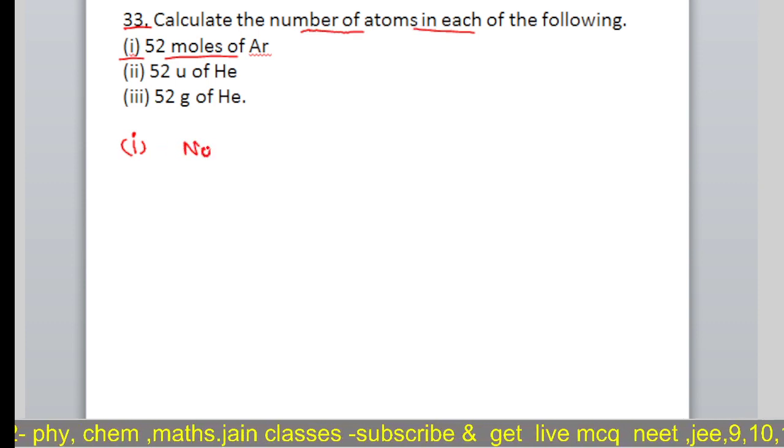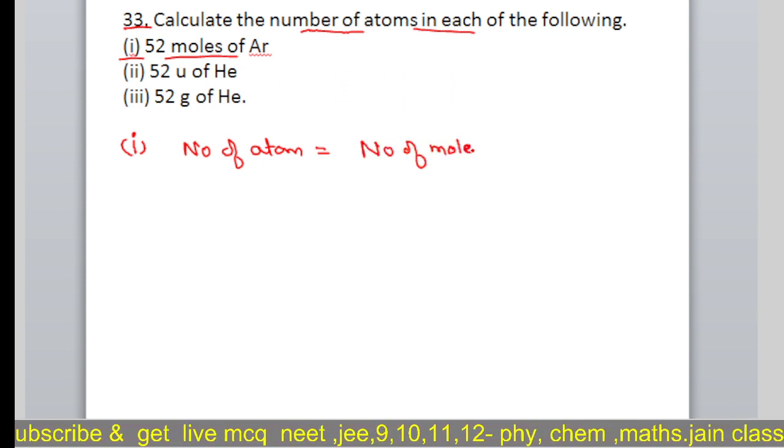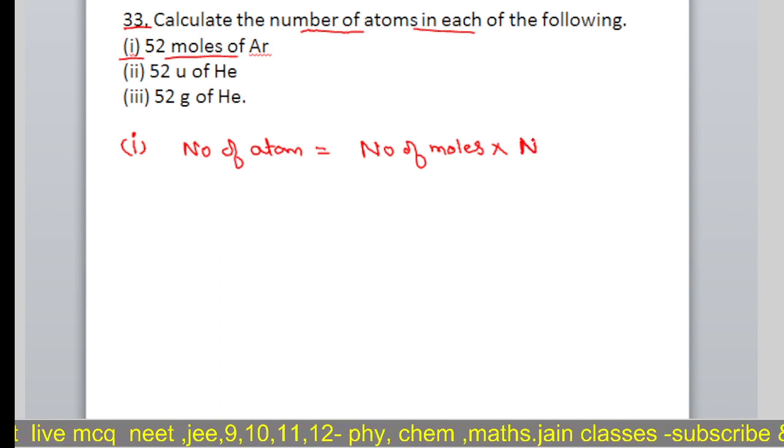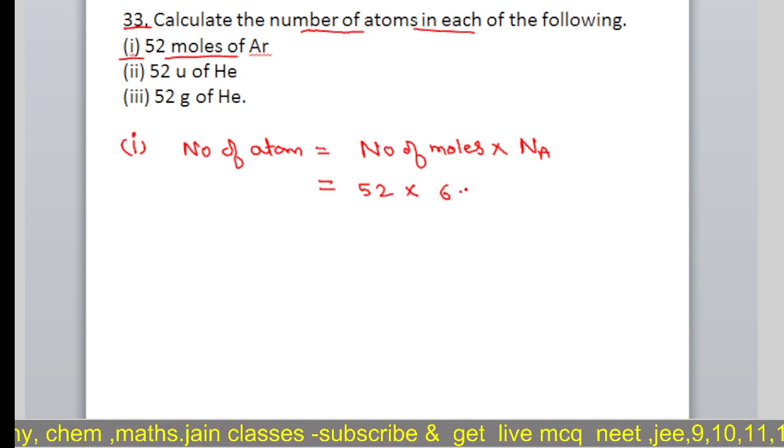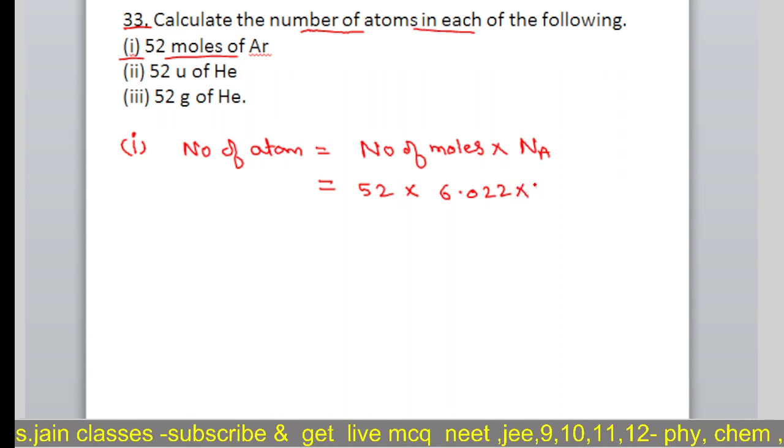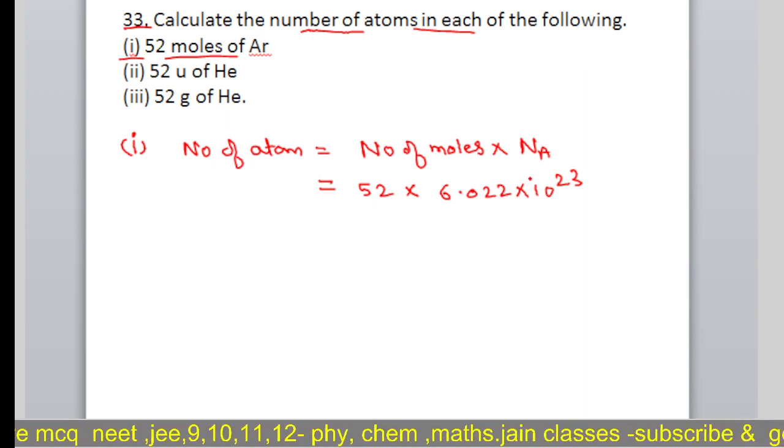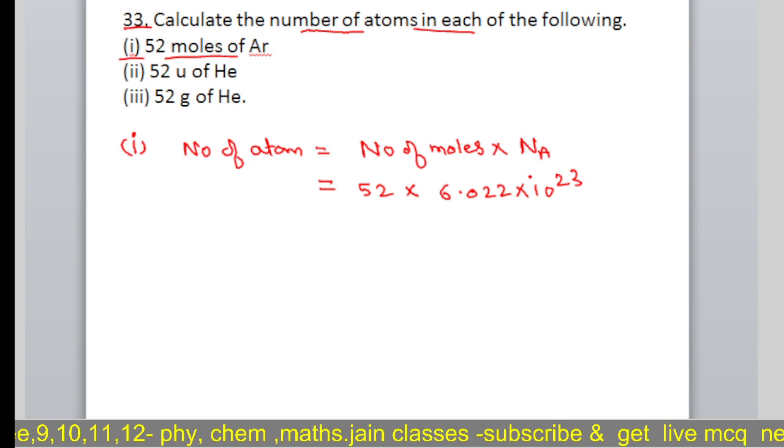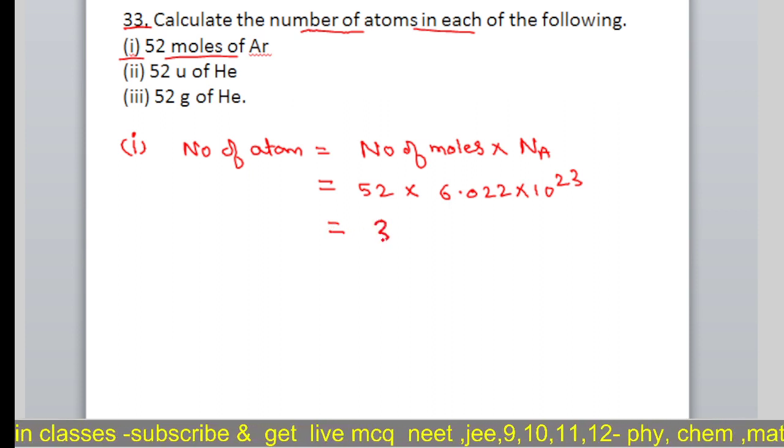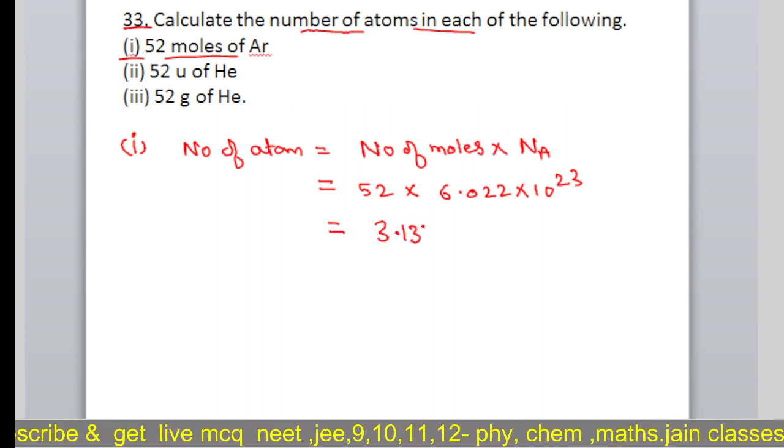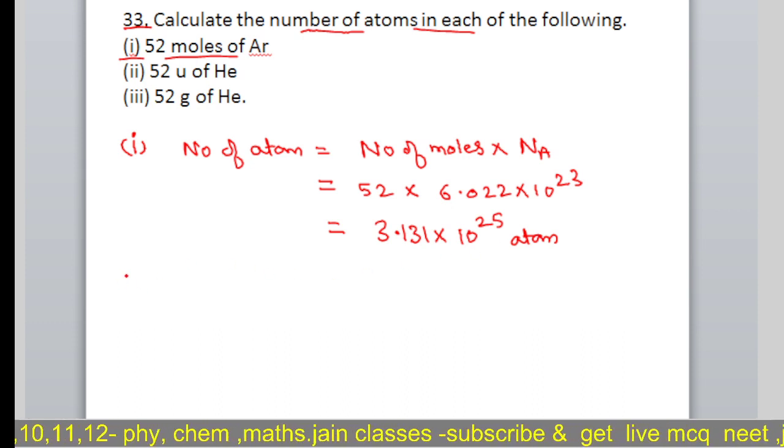Number of atoms equals number of moles multiplied by Avogadro's number. Number of moles is 52 and Avogadro's number is 6.022 into 10 to the 23. When we solve this, 52 multiplied by 6.022 into 10 to the 23 gives approximately 3.131 into 10 to the 25. This is how the first part is solved.